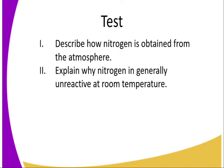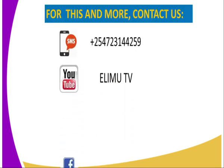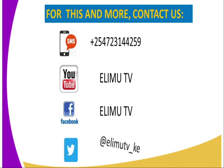Let's review: number one, describe how nitrogen gas is obtained from the atmosphere. Number two, explain why nitrogen gas is generally unreactive at room temperature. You can refer to secondary chemistry students book three, or contact us through the numbers on your screen, visit our YouTube channel Elimu TV, our Facebook page, or tweet at Elimu TV underscore KE. Once again, I'm your tutor Mr. Mwangi Francis — do stay tuned for more lessons to come.